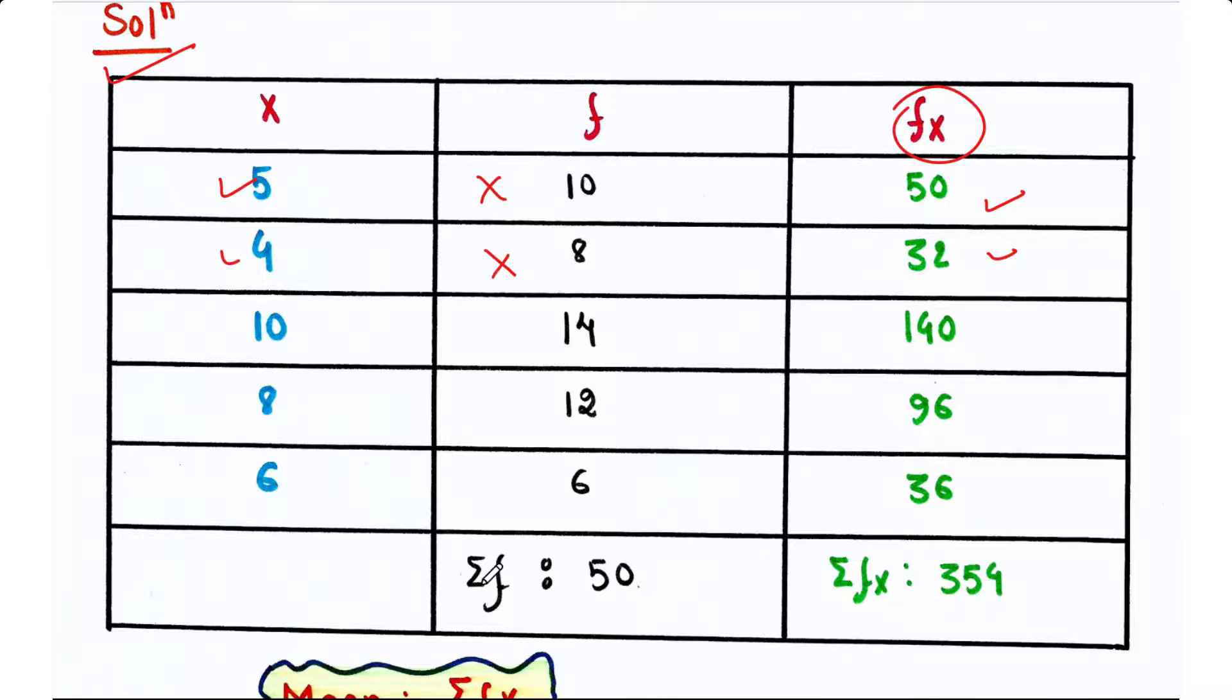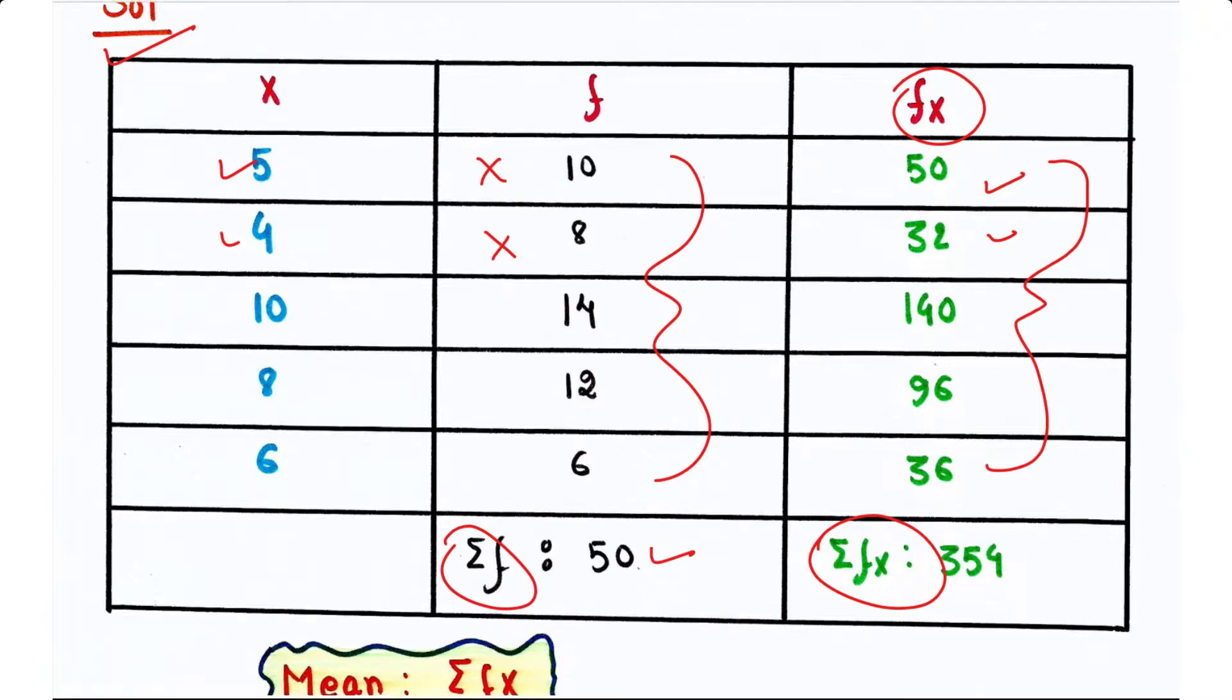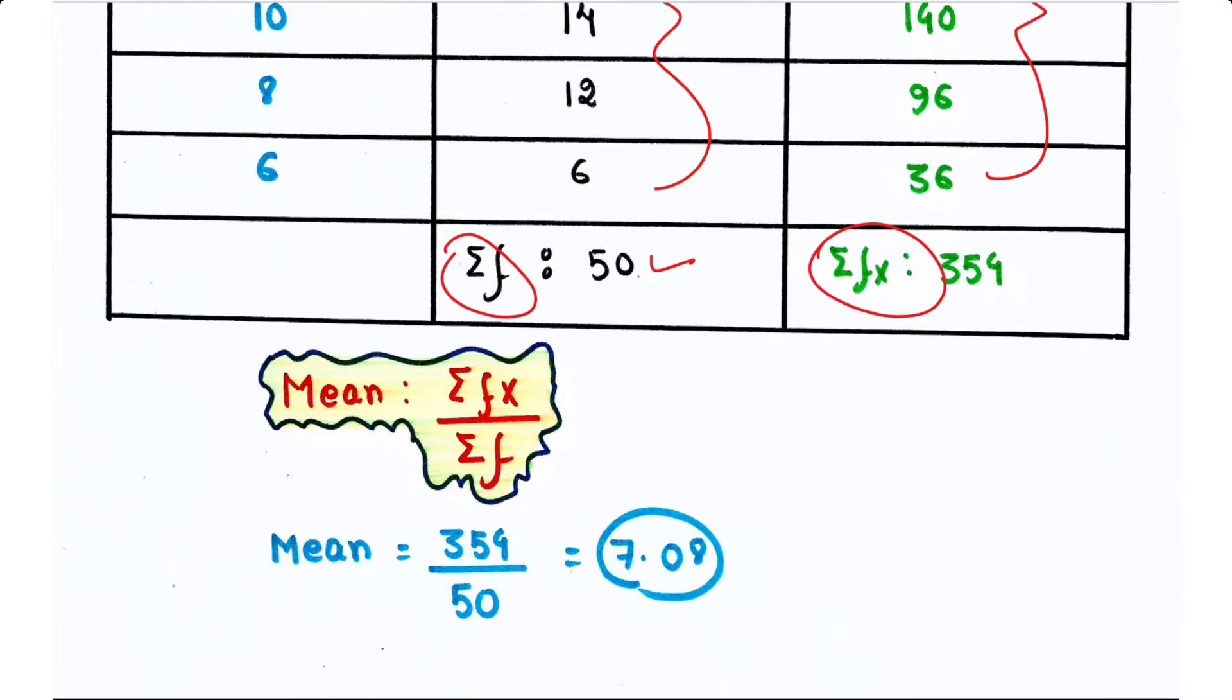Then we will just add these values. Like when we add all the values in this column, we will get summation of fx, that is 354. Now mean is equal to summation of fx by summation of f. That means 354 by 50, and the answer is 7.08.